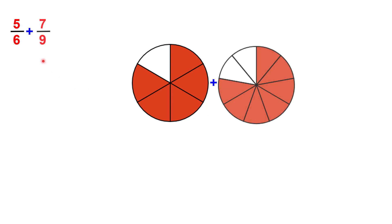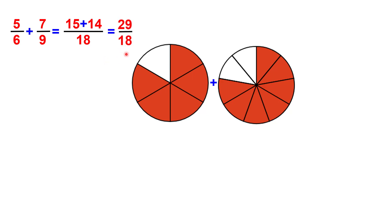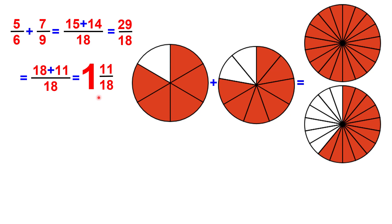Now let's see another example: 5 over 6 plus 7 over 9. We already know that 9 and 6 have a least common denominator of 18. So 18 divided by 6, multiplied by 5 is 15. 18 divided by 9 is 2, times 7 is 14. And we get 29 over 18. Again, we look for the greatest multiple of 18 which is less than or equal to 29 — in this case, it's 18 itself. We do 29 minus 18 and get 11. So 18 over 18 is 1, and the remainder is 11 over 18. The result is 1 and 11 over 18. You can see it here on the right-hand side: a whole, which is 1, and the fraction 11 over 18.